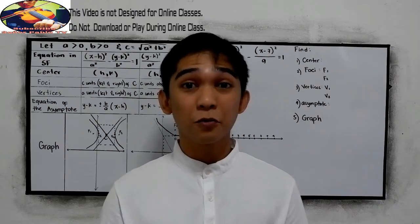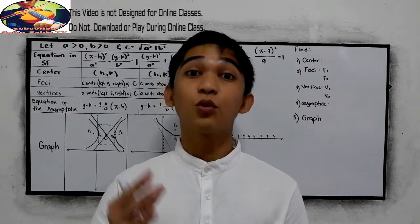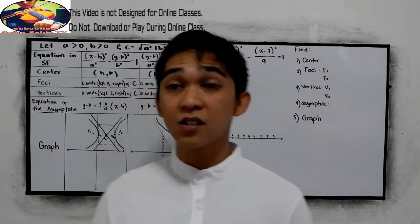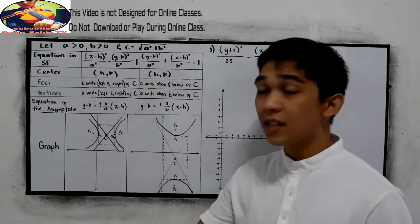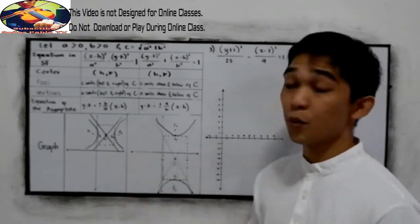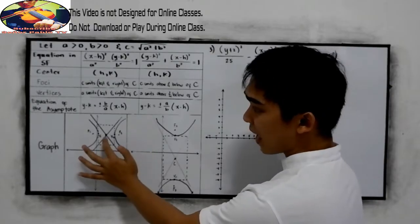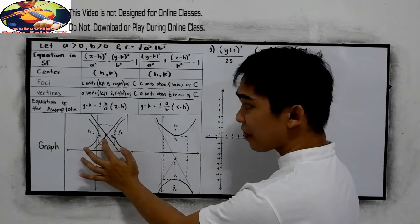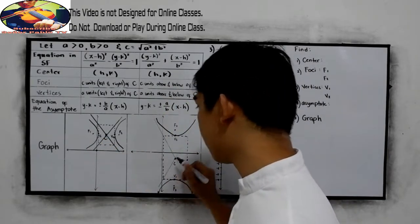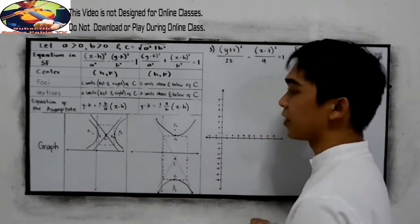So how are we going to find the center, the foci, the vertices, and how to graph the parabola? So if that is the case, we will be needing a different table. So this will be the table that we are going to use. So notice in our graph, the center is not located in our origin. We know that our origin is located here. Notice that it is not located in the origin.